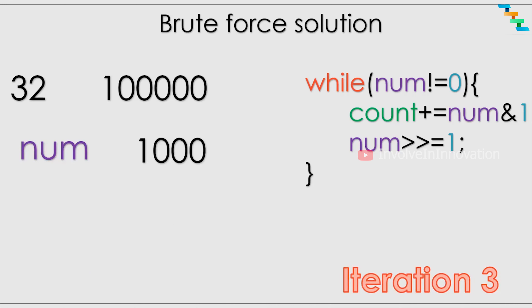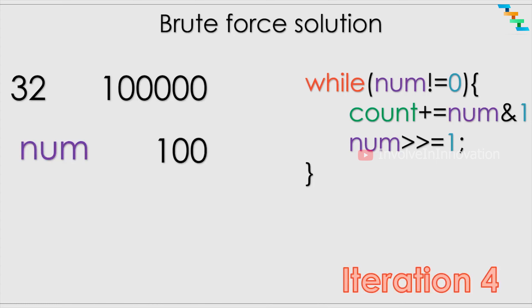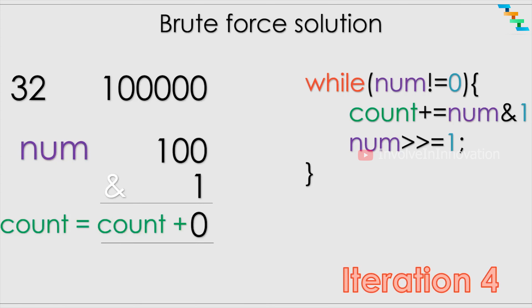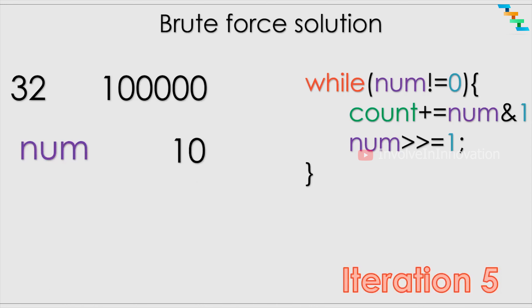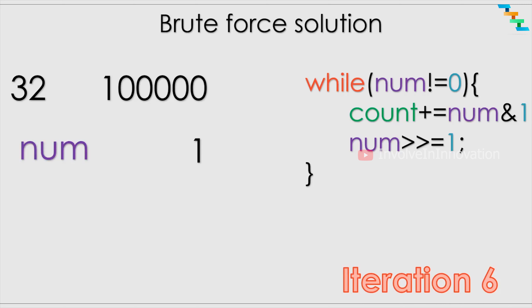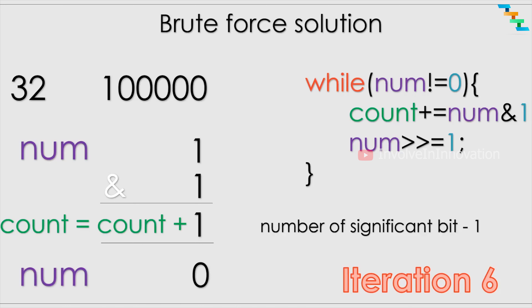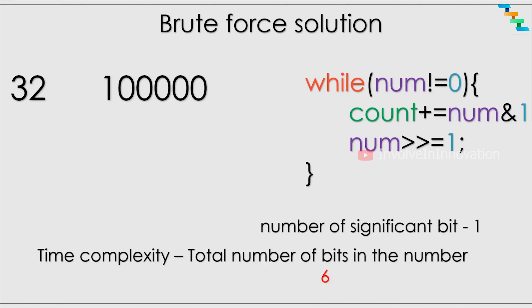With number 8, we do the AND operation with 1 and still get zero because the last bit is zero. After right shifting, the number becomes 2. We AND 2 with 1 and get zero because the last bit of 2 is also zero. Right shifting 2 by one gives us 1. AND of 1 with 1 gives the value 1, so count becomes 1. The number then becomes 0, and we found the number of significant bits in 32 is 1.